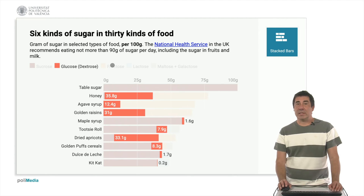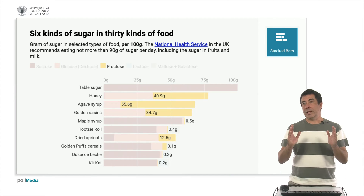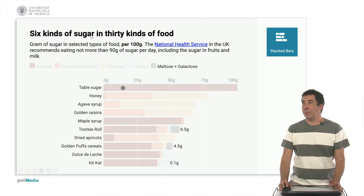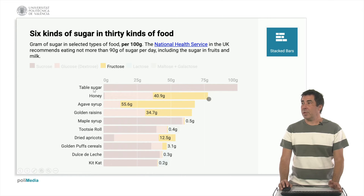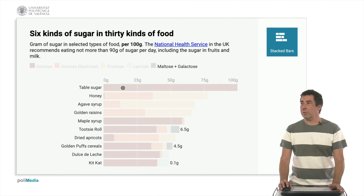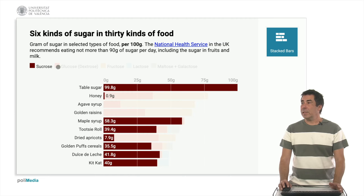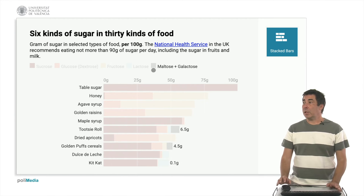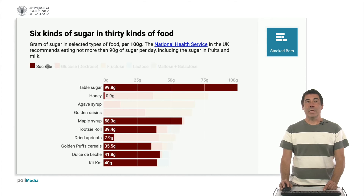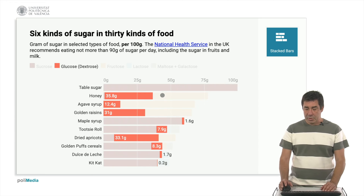Another type of representation is stacked bars. Stacked bars are useful when we have accumulative information that we want to split into different types. Here we have an example of 6 kinds of sugar in 30 kinds of food. For a given food item, we can see the amount per 100 grams of sucrose, glucose, fructose, lactose, maltose, and galactose. We can see the total amount, but also each component. When we select one type of sugar, we see that type represented across all the foods.